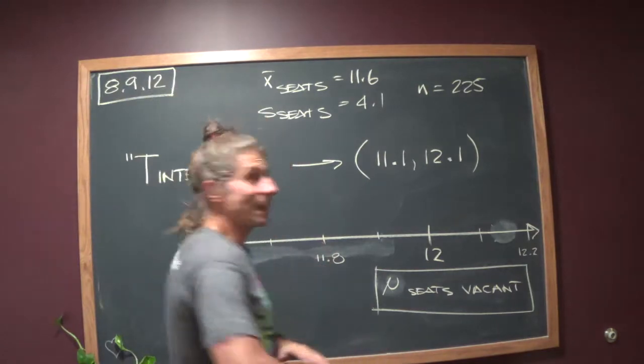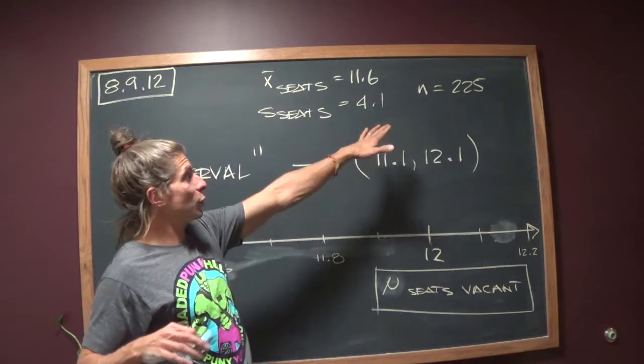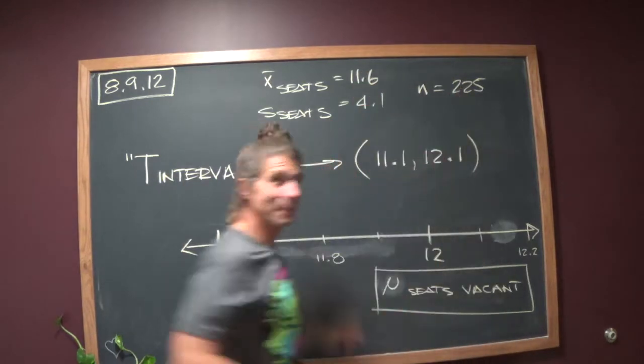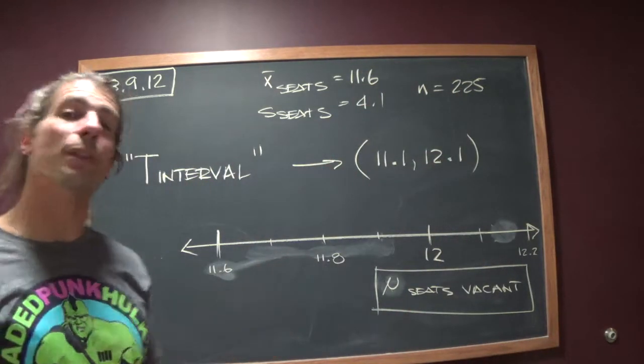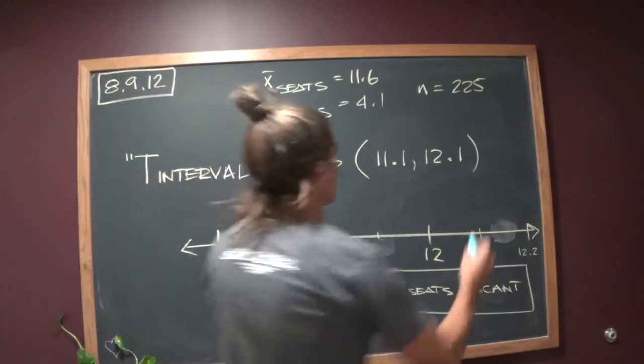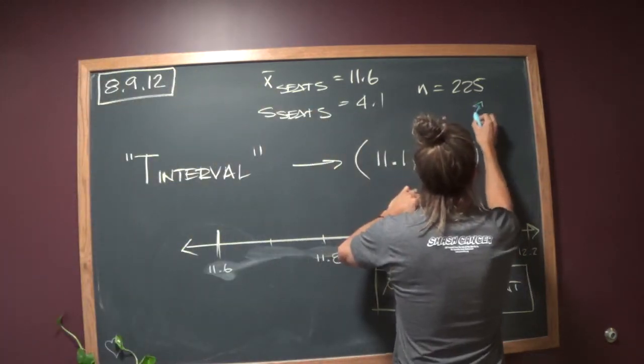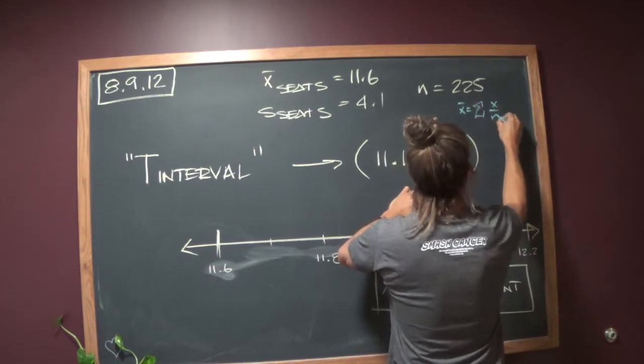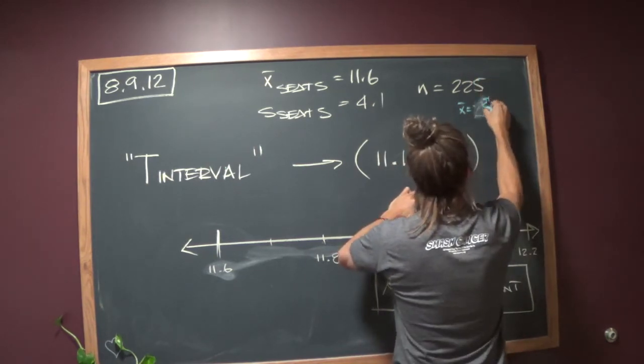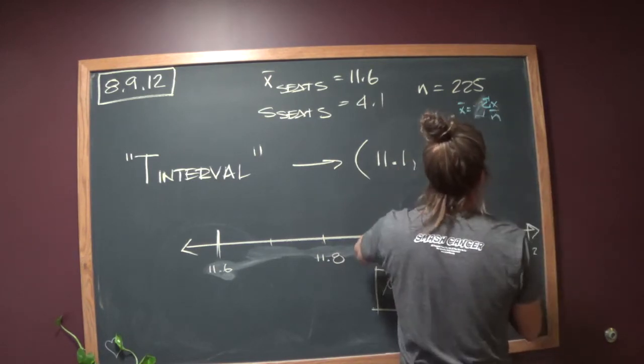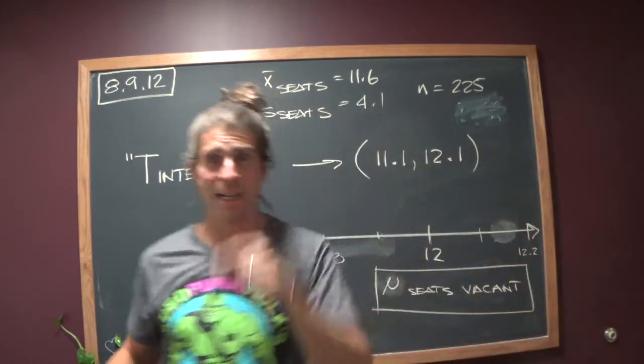Now, we don't know what the individual X values are. All we know is that the total number of seats on all 225 flights would be equal to that times that. That would be how many seats were empty over the entire flight. See if you can convince yourself of why that's true. I'll give you a hint. Because the average is defined to be the sum of X over N. So if you multiply X bar times N, you get the sum of X. I didn't come here to tell you that though.